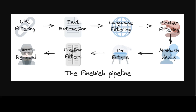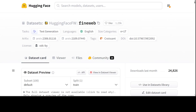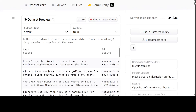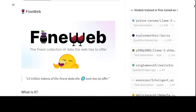They then applied additional filters to match and surpass the performance of the C4 dataset, including removing non-English data, applying heuristic filters at both the line and document level, deduplicating at the line level, and removing documents containing words from a word block list. They also applied custom filters to further improve dataset quality. The result was the final FineWeb dataset comprising 15 trillion tokens — and you can use it today.